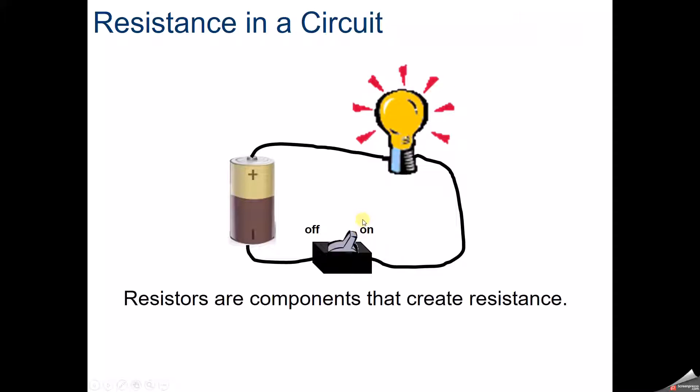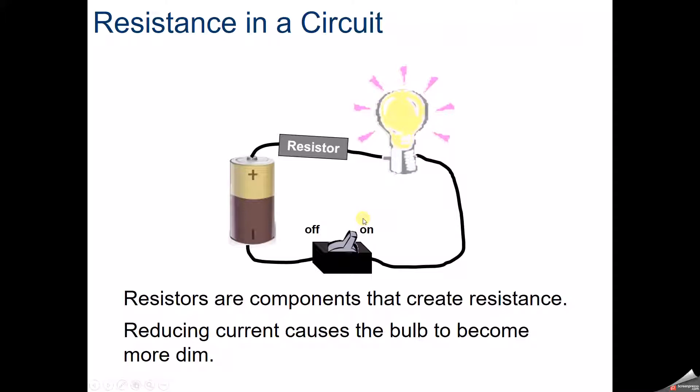We bring in a resistor and drop it into our circuit. What's that going to do? The light's going to become dimmer because we're resisting the flow of electrons through that circuit.